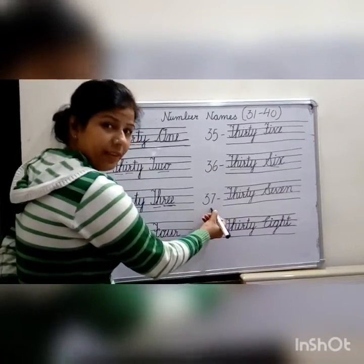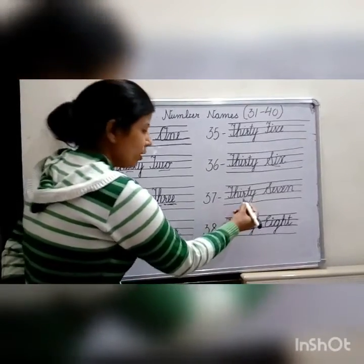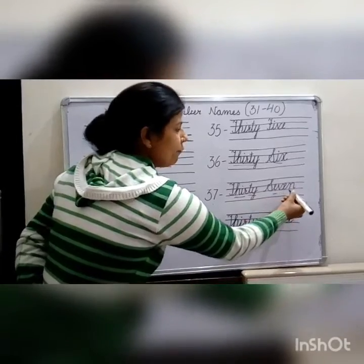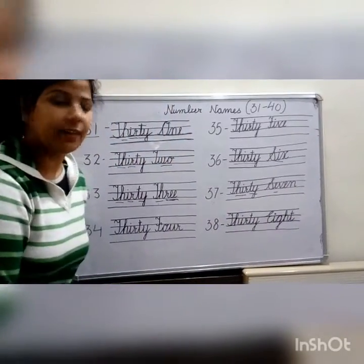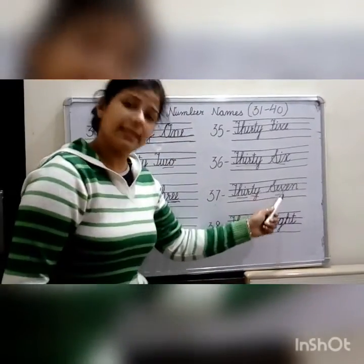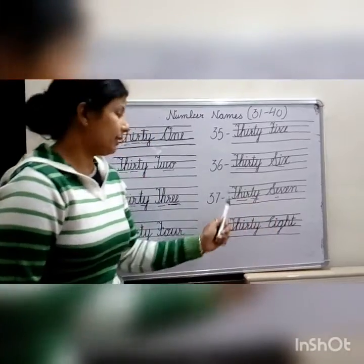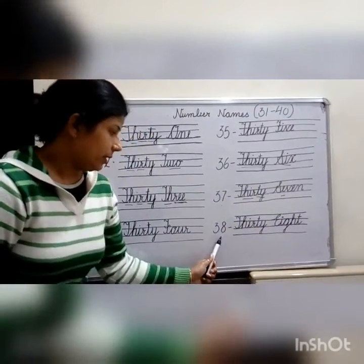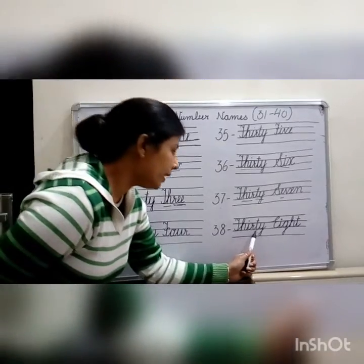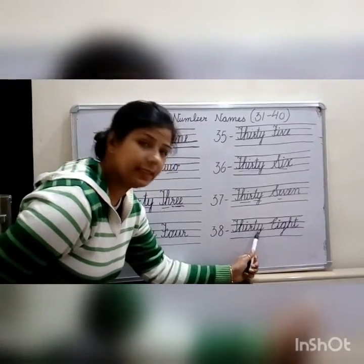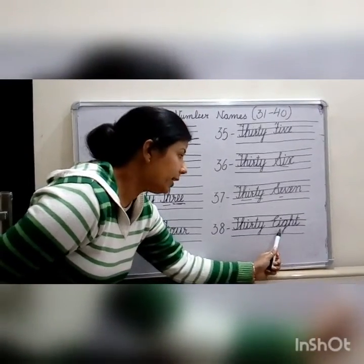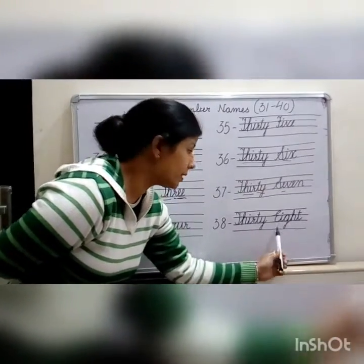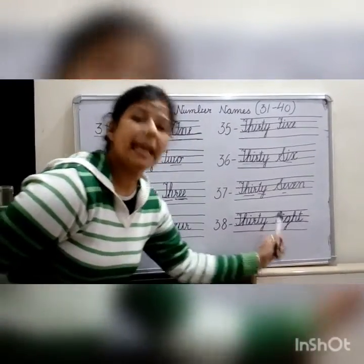It's 37. Thirty. S-E-V-E-N — 7. Thirty-seven. See here, 38. Thirty. E-I-G-H-T — 8. Thirty-eight.